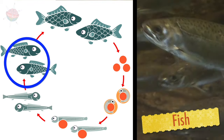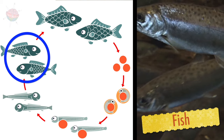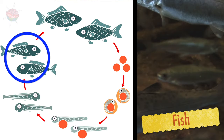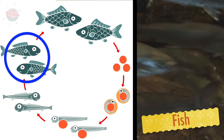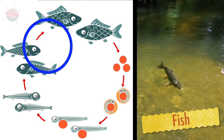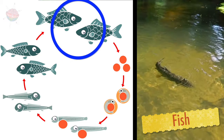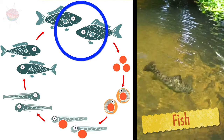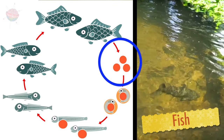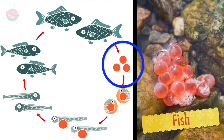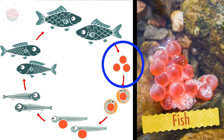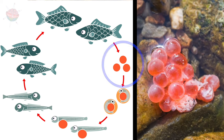Later they become a juvenile and develop the bodily characteristics of a fish. They become an adult when they can reproduce, and then they spawn, which means that they produce eggs and milt to create fertilised eggs.